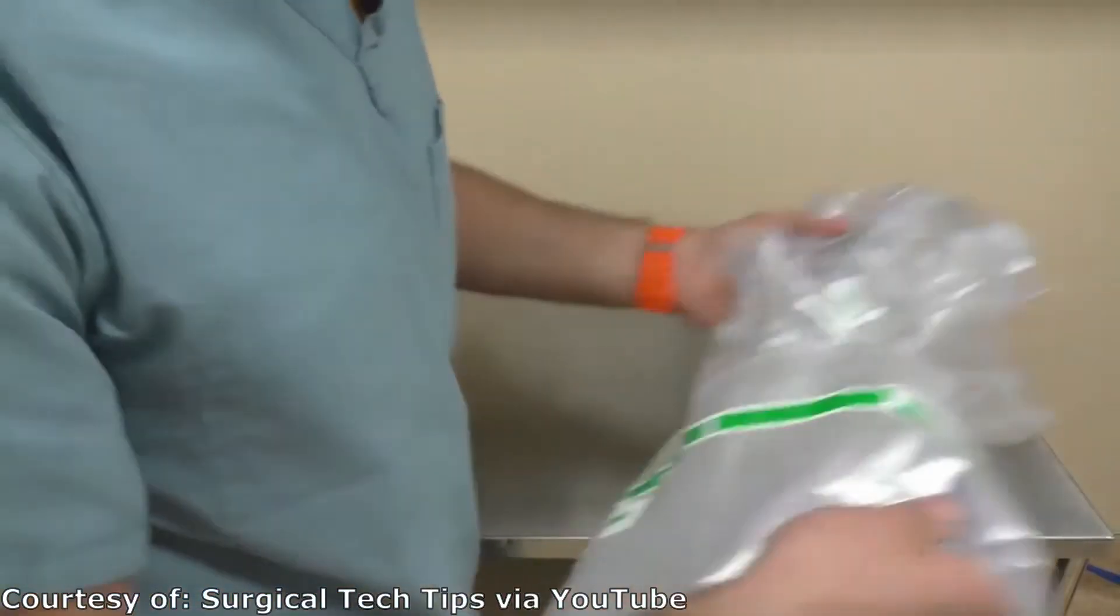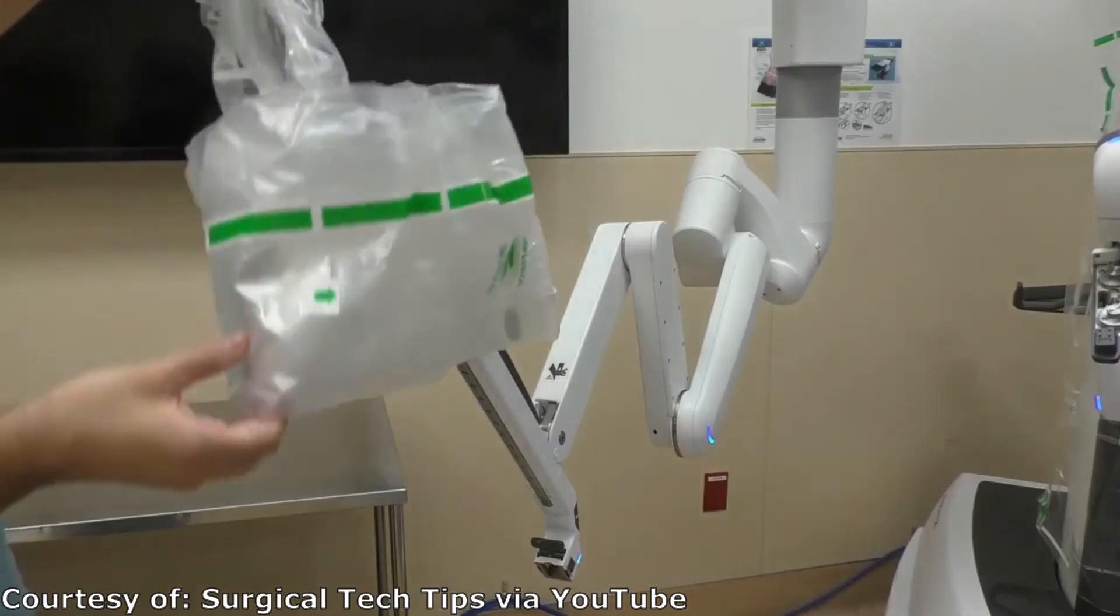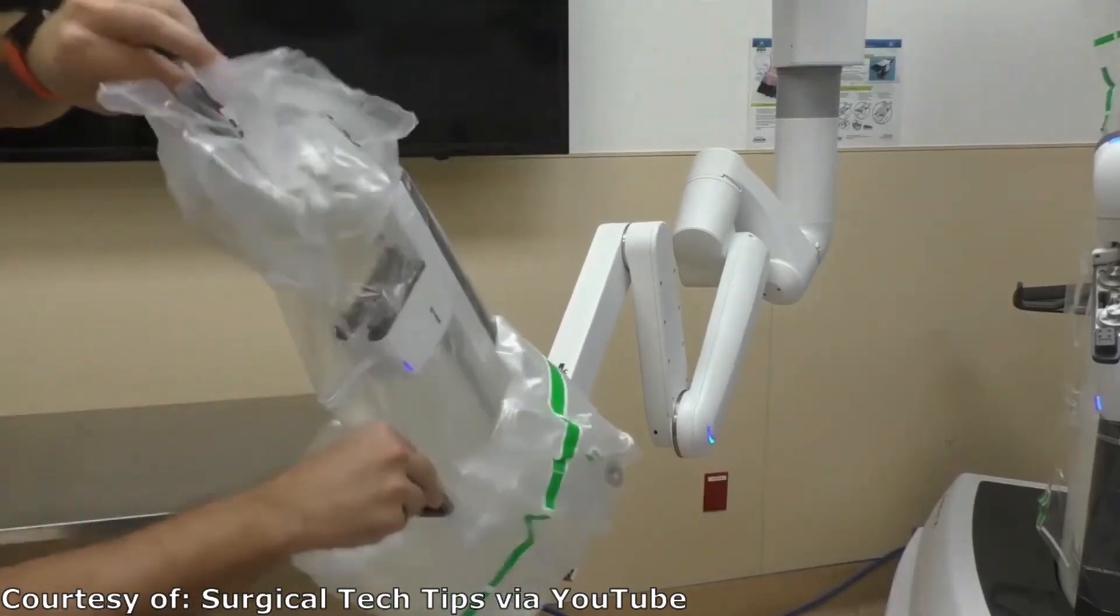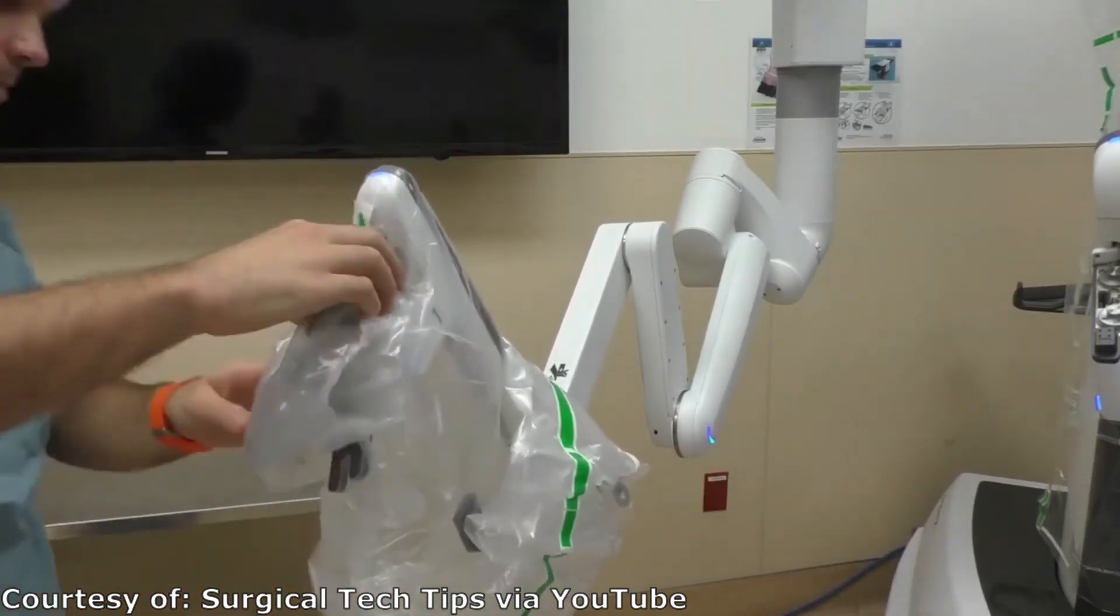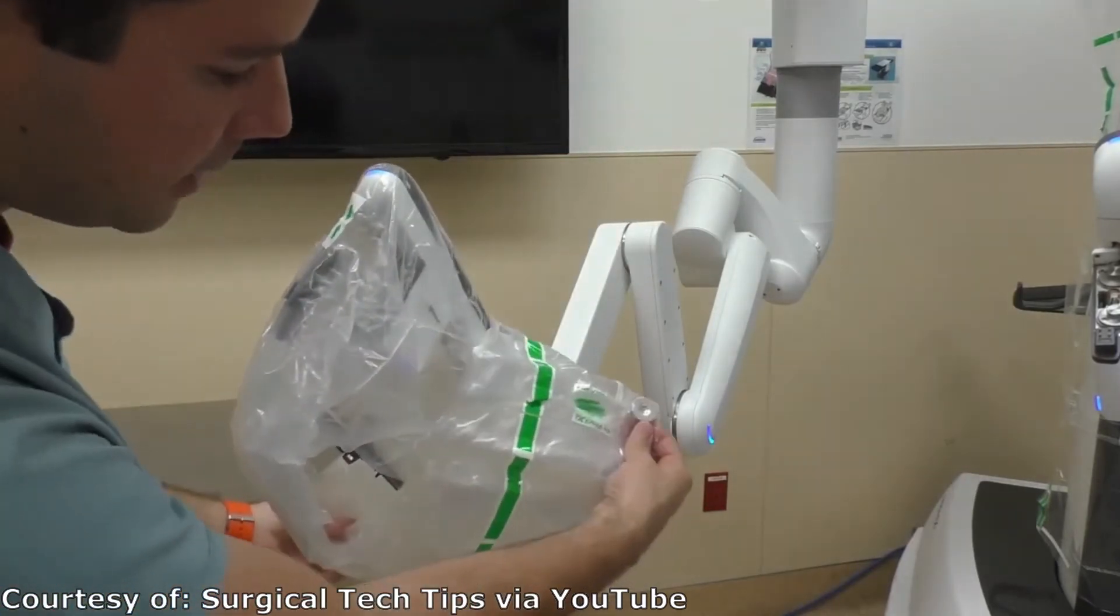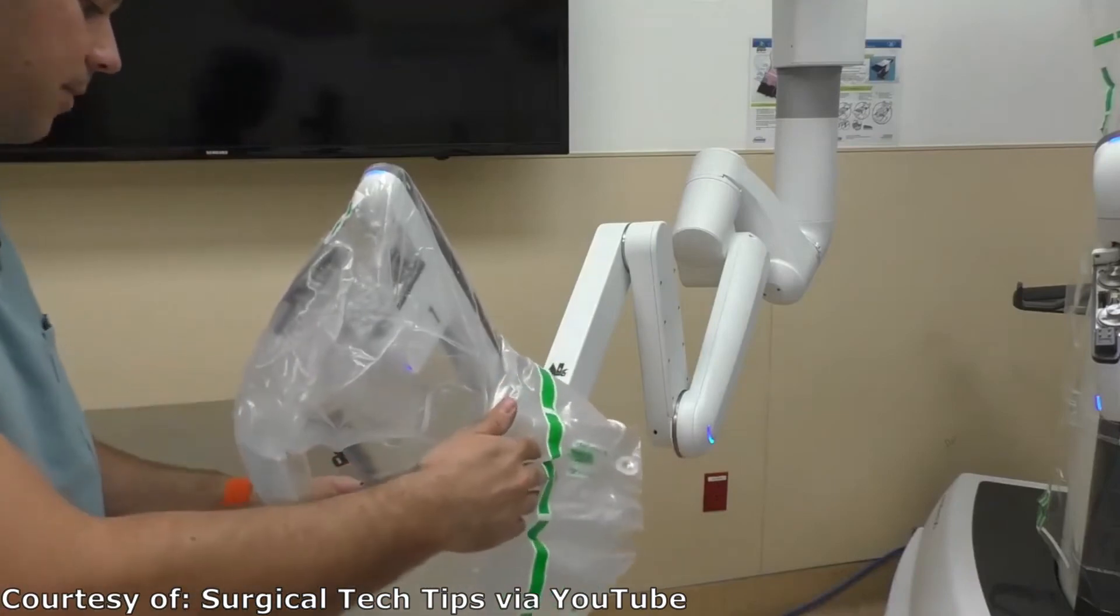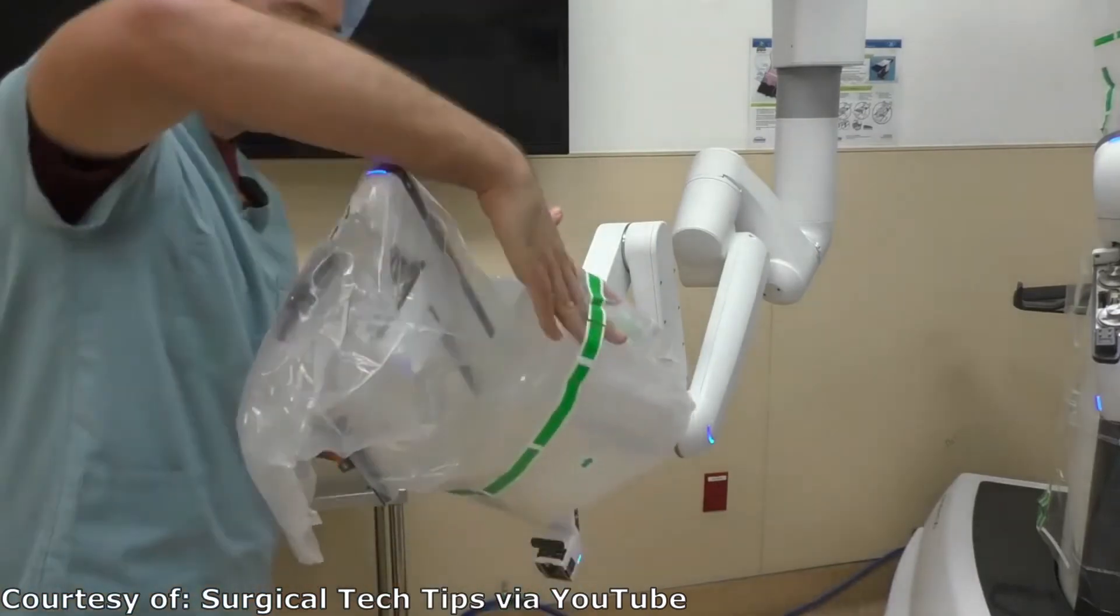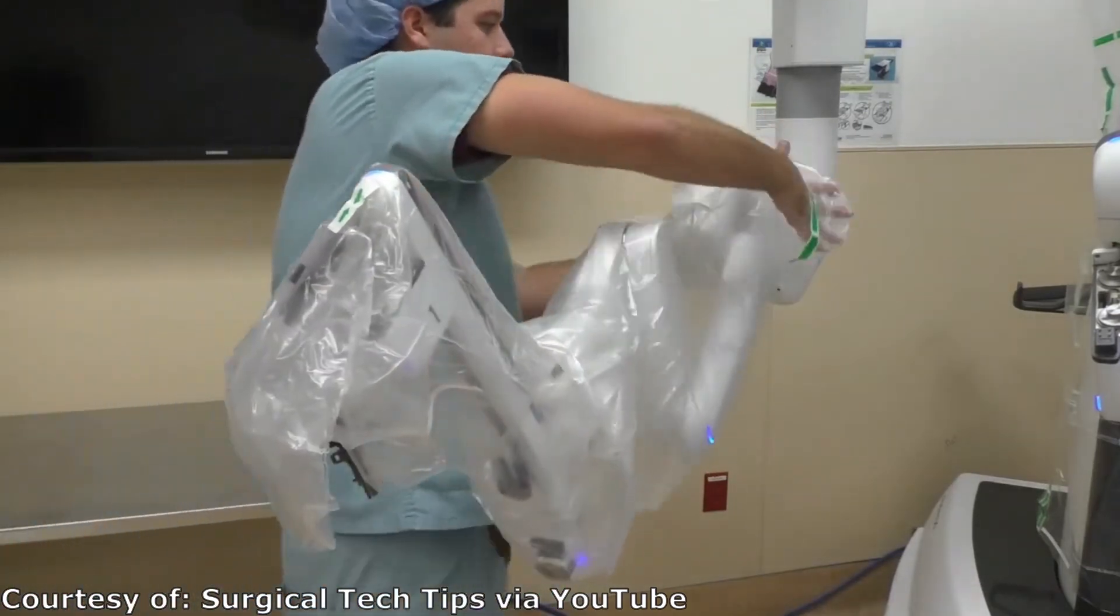Within OR settings, a sterile environment is required. Commonly for robotic devices within the OR, a plastic sterile cover is draped over the arm. However, due to the pinch points of the gripper, this solution was not feasible for the end effector. So, how can we solve this problem? We decided to go with the disposable finger design.